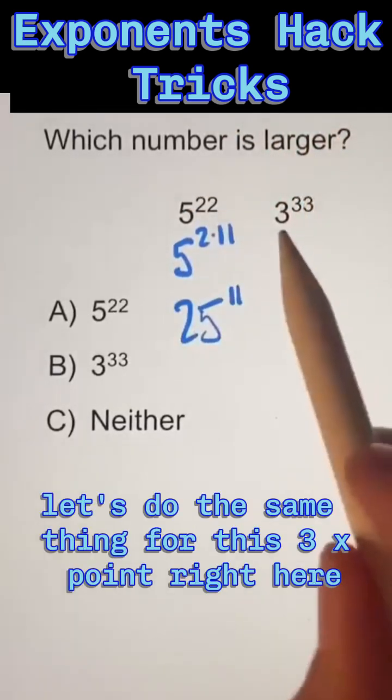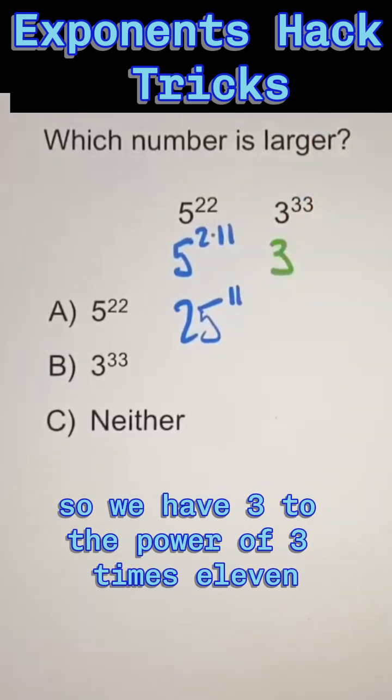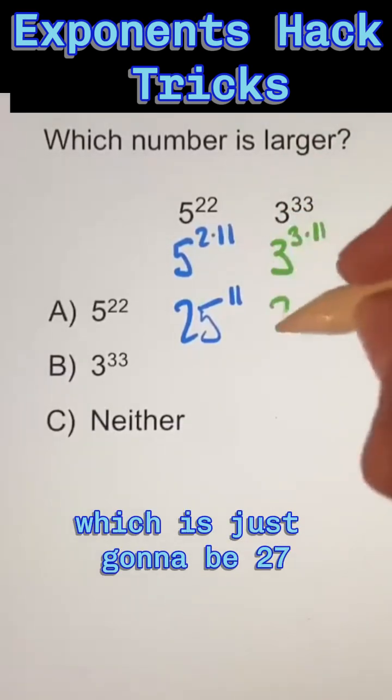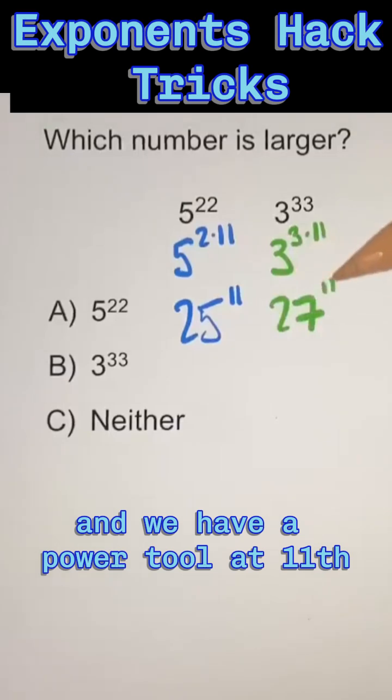So let's do the same thing for this 3 exponent right here. So we have 3 to the power of 3 times 11. So now we can rewrite our base as 3 to the power of 3, which is just going to be 27, and we have a power to 11.